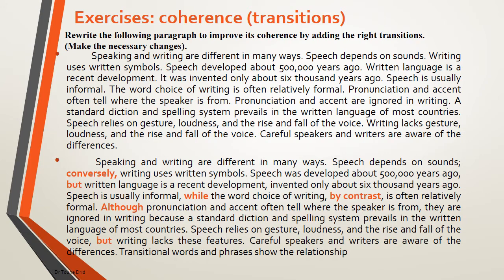Let's read the paragraph without transitions. Speaking and writing are different in many ways. Speech depends on sounds. Writing uses written symbols. Speech developed about 500,000 years ago. Written language is a recent development. It was invented only about 6,000 years ago. Speech is usually informal. The word choice of writing is often relatively formal. Pronunciation and accent often tell where the speaker is from. Pronunciation and accent are ignored in writing. A standard diction and spelling system prevails in the written language of most countries.